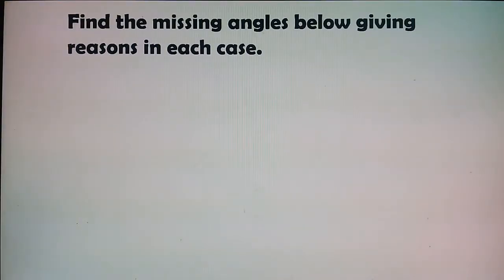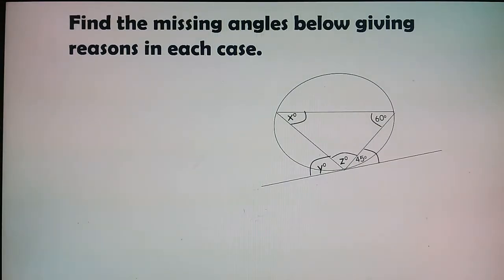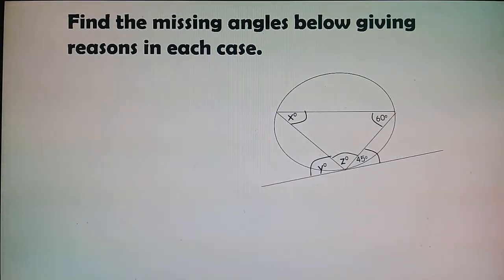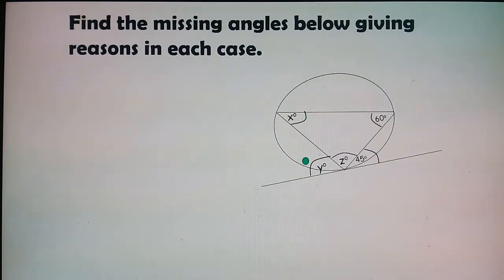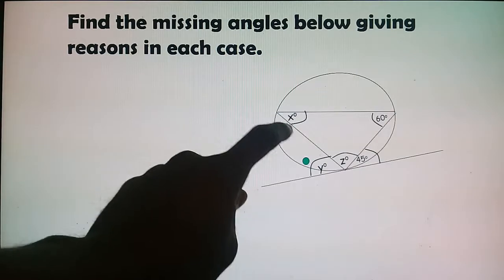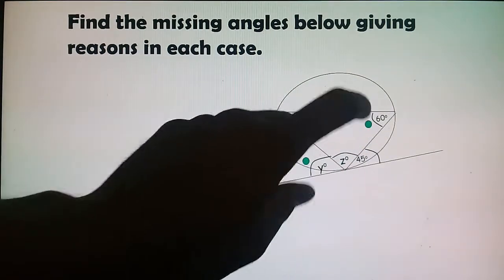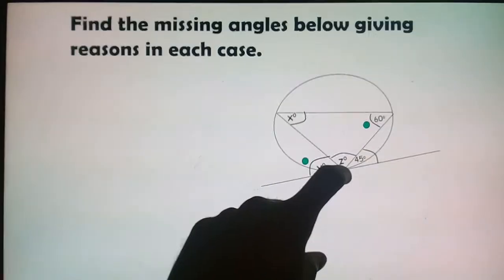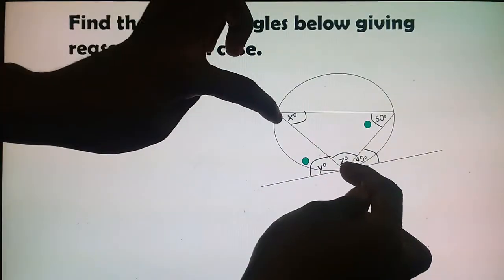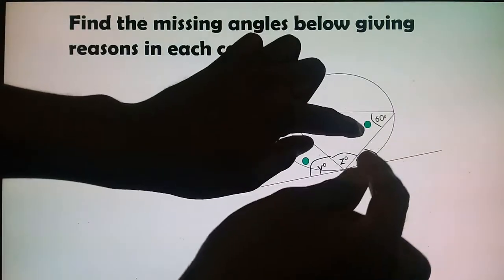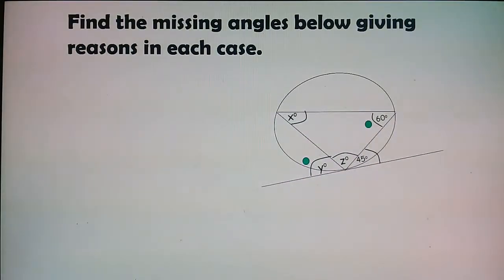They say: find the missing angles below, giving the reason in each case. You have to write the missing angles and state the reason. Here is our problem and diagram. We have our angles and we use the Tan-Chord Theorem. We have our tangent there. Looking at the right angle — between the tangent and the chord — it equals the angle in the alternate segment. So this angle equals 60°.